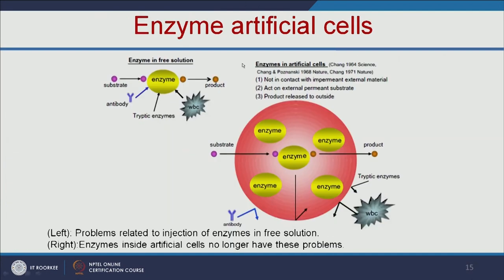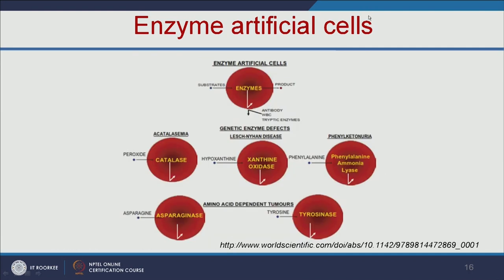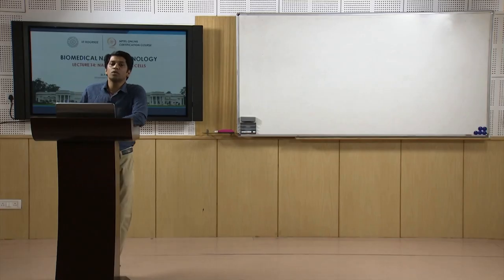Let us see how to encapsulate enzymes into artificial cells. In some cases, we do not need to encapsulate the whole cell. If you have enzyme defects, you can encapsulate only the particular enzyme, which can also act as a therapeutic artificial cell. When you inject enzymes directly, antibodies are produced against them, WBCs attack, and proteolytic enzymes digest your enzymes. When you encapsulate them into artificial cells, the enzymes are protected. The substrate enters the artificial cell, is converted into a product, and the product is released. Examples include diseases like acatalasemia, caused by lack of catalase enzyme, and phenylketonuria, caused by lack of phenylalanine ammonia lyase. Encapsulating these enzymes into artificial cells can treat patients with those enzyme deficiencies.